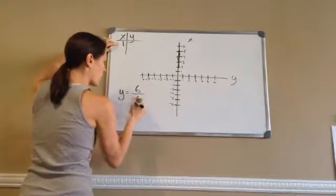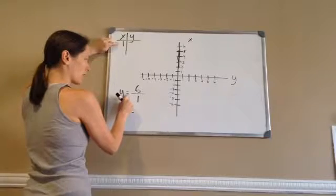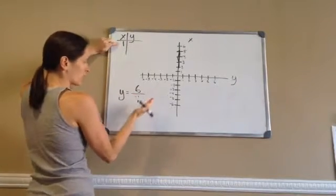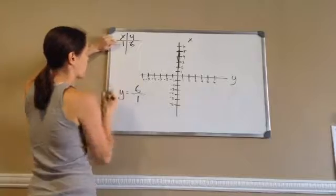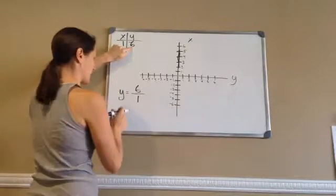If x was 1, then what is y? y is 6 over 1, which is really 6. So when x is 1, y is 6.